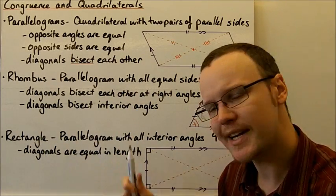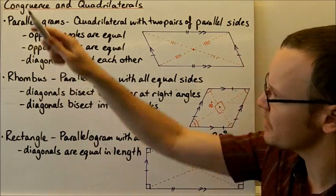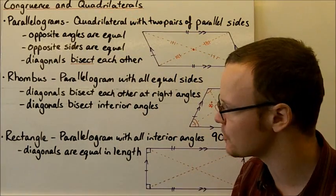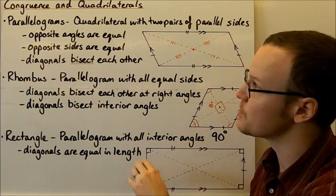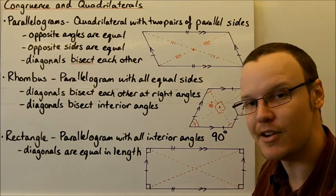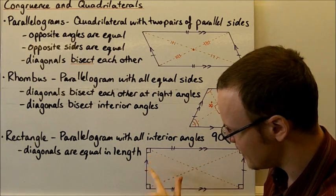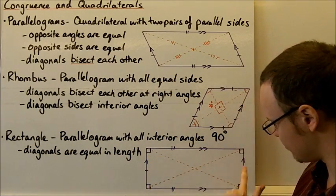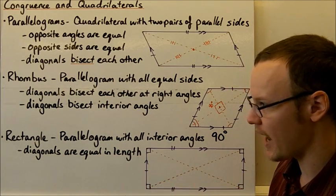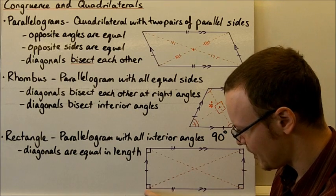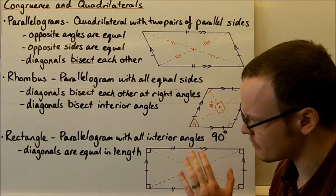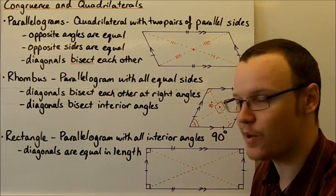Looking at a rectangle — a rectangle is a parallelogram as well, so all of the properties of a parallelogram apply to it. The only difference between a parallelogram and a rectangle is that all the interior angles are 90 degrees, so all the interior angles are right angles. The diagonals of a rectangle are also equal in length — this length here is equal to this length here. Those are the special properties of a rectangle.